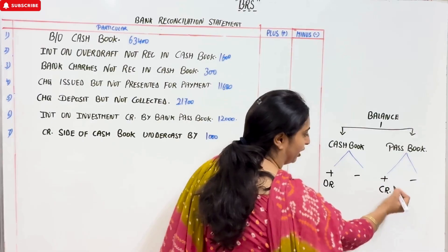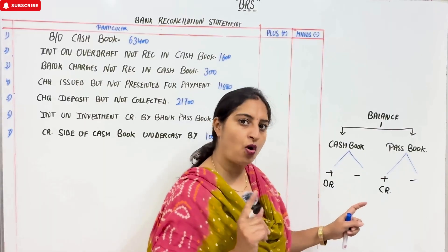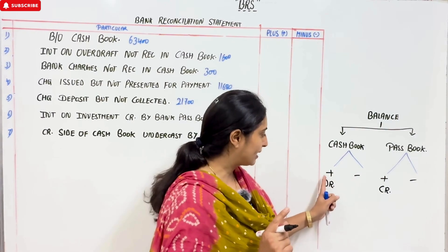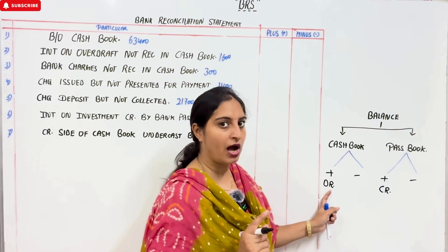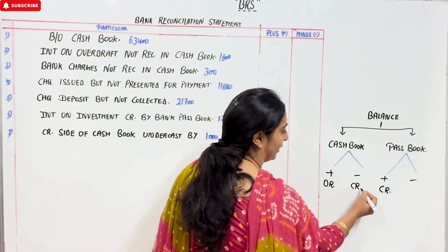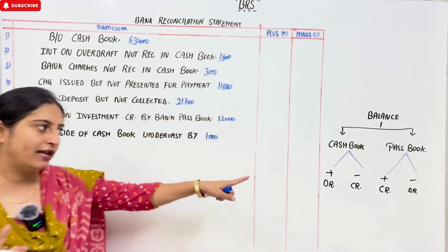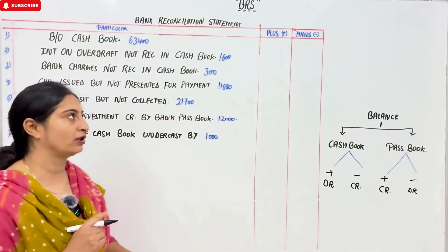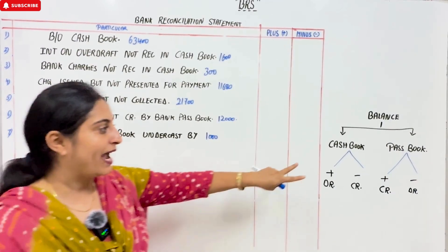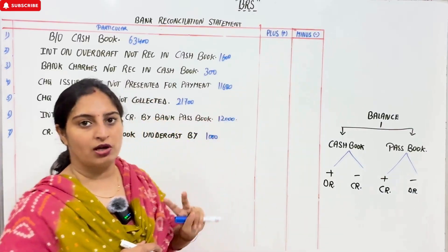Credit is positive. The two negatives are overdraft. Now, if this is negative and this is positive debit, the cash book is positive — which is opposite, which is credit. And this is debit. Just one thing you have to remember: what is negative? What is overdraft? Bank overdraft cash book — the cash book overdraft is negative. So we will start from the negative column.